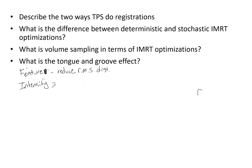Intensity-based registration is automatic and uses a TPS-specific algorithm. A lot of those are kind of black boxes — each system has its own — but it's intensity-based. That's pretty much all you need to know.